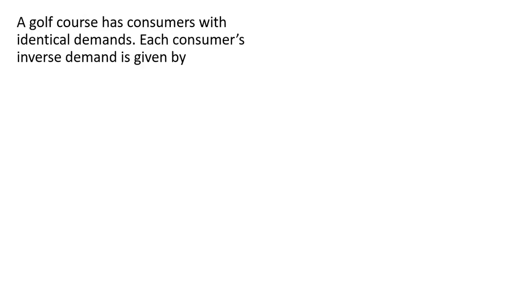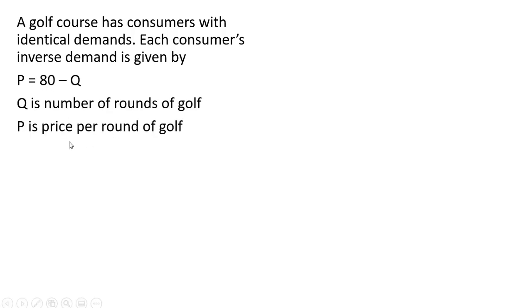A golf course has consumers with identical demands. Each consumer's inverse demand is given by price equals 80 minus Q. Q is the number of rounds of golf and P is the price per round of golf.